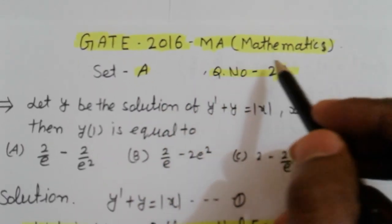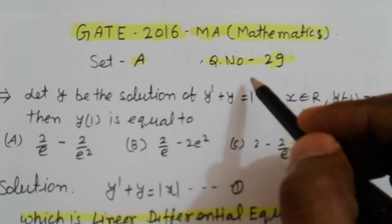GATE 2016, subject code MA, subject Mathematics, Set A, equation number 29.